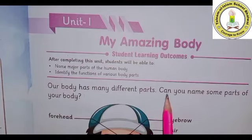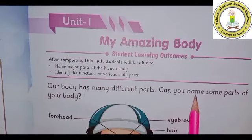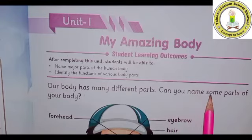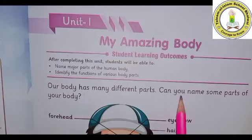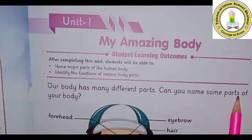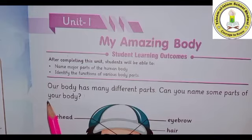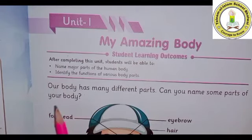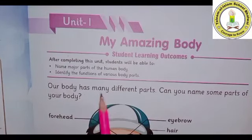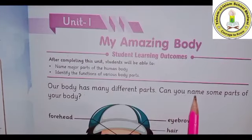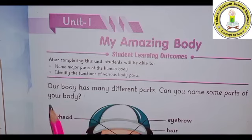Next sentence: Can — C-A-N. You — Y-O-U. Name — N-A-M-E. Some — S-O-M-E. Parts — P-A-R-T-S. Of — O-F. Your — Y-O-U-R. Body — B-O-D-Y. Can you name some parts of your body?